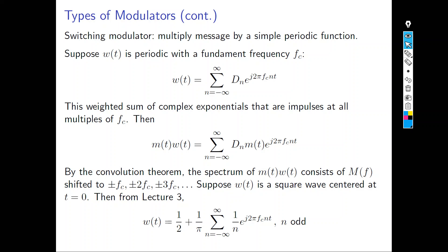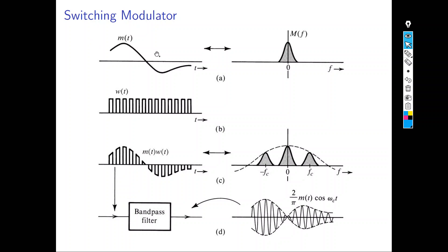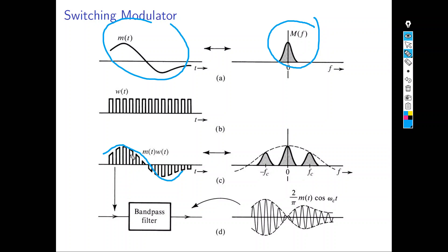Essentially, instead of multiplying by just one cosine, you multiply by multiple cosines at different frequencies since e^(j·) is related to cosine. When you multiply the pulse train w(t) with m(t), you get a train of pulses shaped by the envelope of m(t). In the frequency domain, M(f) gets replicated at multiple frequencies. A band-pass filter is then used to select the desired frequency component.